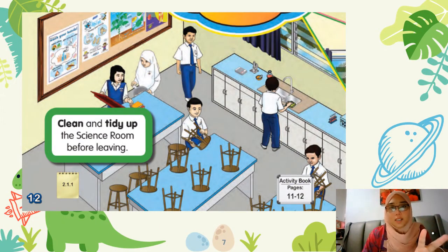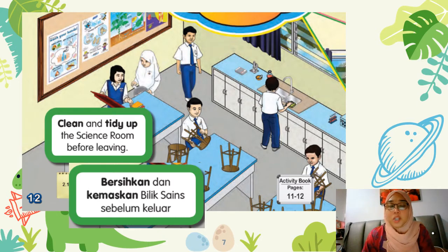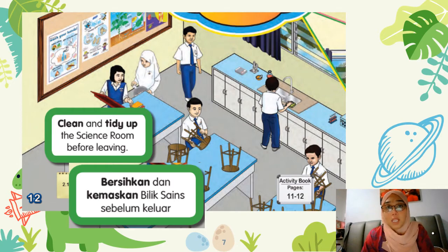The second rule in the science room is you have to clean and tidy up the science room before leaving. Kamu mesti bersihkan dan kemaskan bilik sains sebelum keluar. For example, you have to wash all the beakers or cylinders that you use during the science investigation in the sink, throw away all the rubbish in the dustbin, and put all the stools on the table before you leave the science room. Awak mesti bersihkan peralatan sains yang awak guna untuk eksperimen, dan letak bangku di atas meja sebelum awak meninggalkan bilik sains.